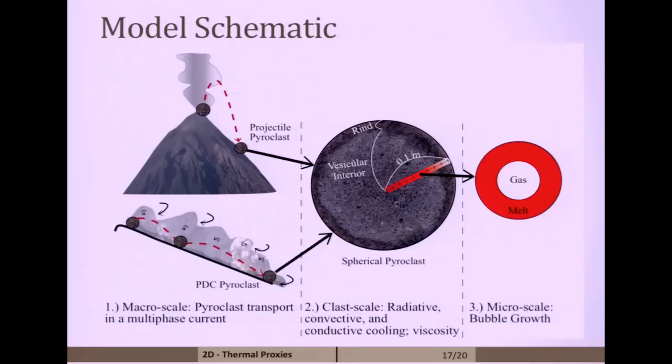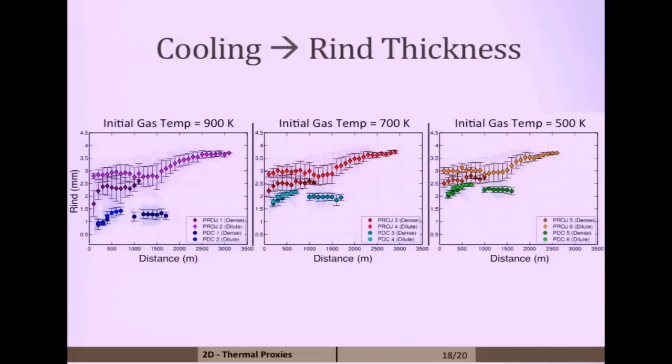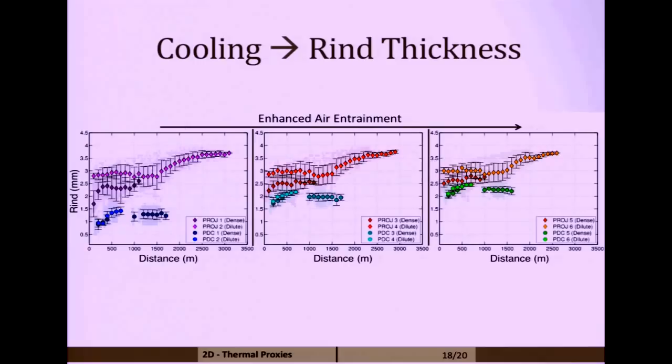What the results show: our vertical axis is that rind thickness or restriction of bubble growth. As we move left to right, we have enhanced air entrainment or essentially a cooler current that these particles travel through. These are the projectile pyroclasts and the lower down are the PDC pyroclasts. You can see that the projectiles aren't really affected by entrainment of air, and that's because they travel mostly through ambient atmosphere. But the PDC pyroclasts actually, as you entrain more air, you cool these currents more significantly. You actually get an increase in that rind thickness with cooler currents.